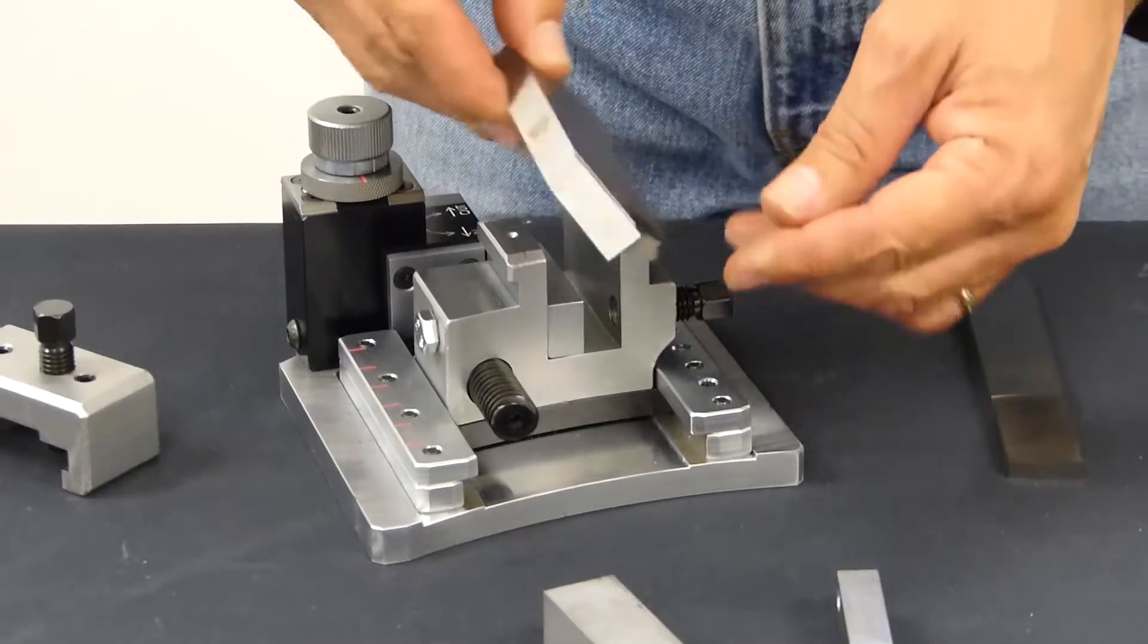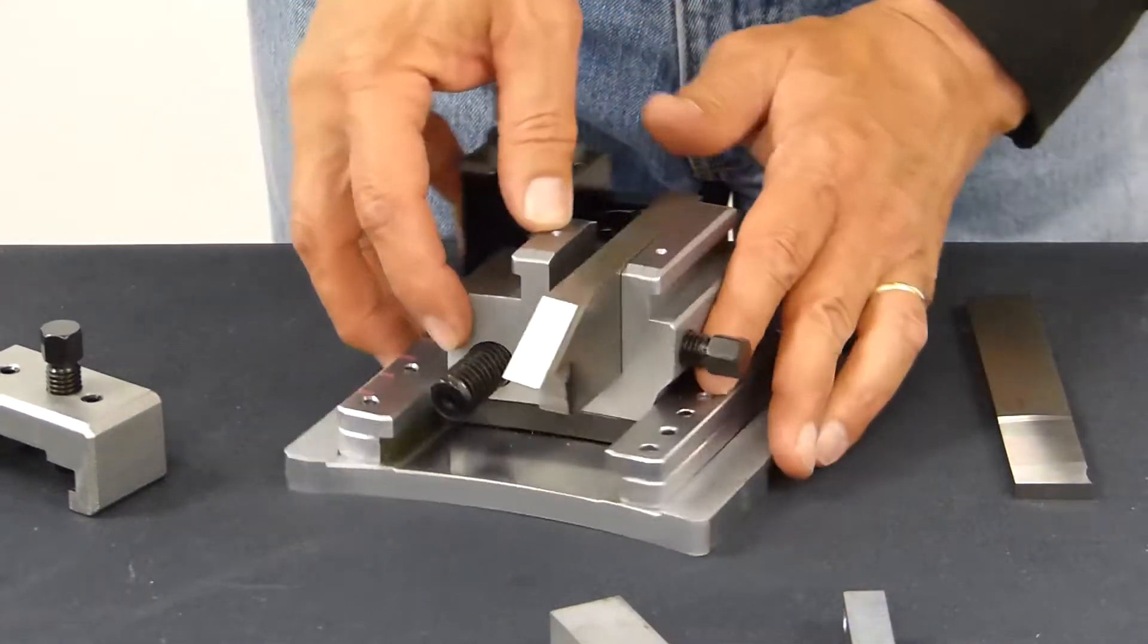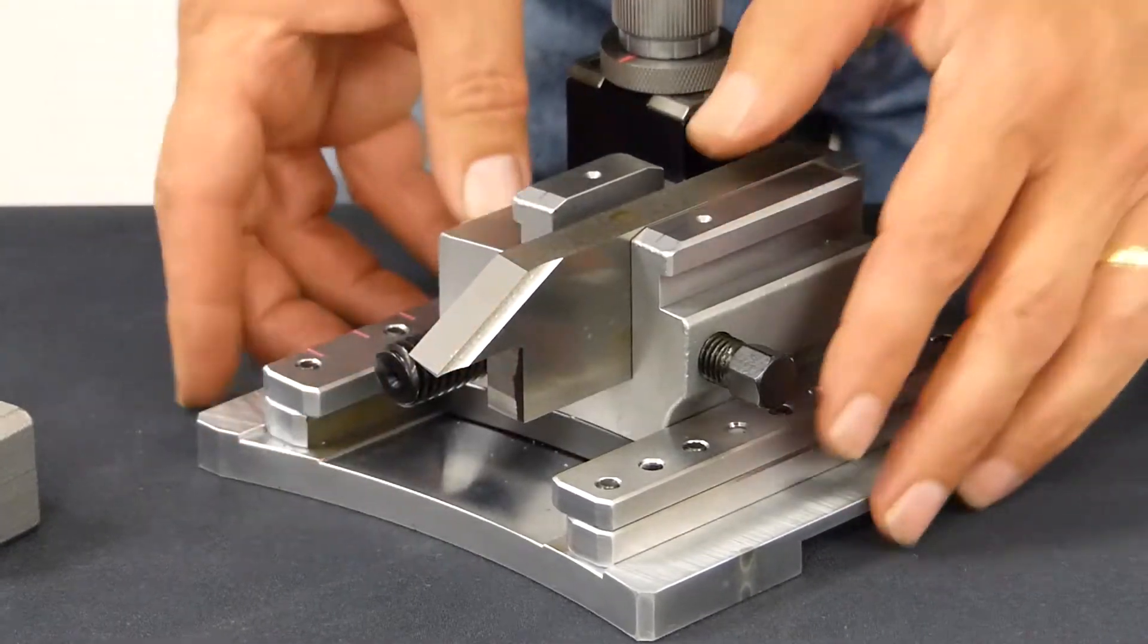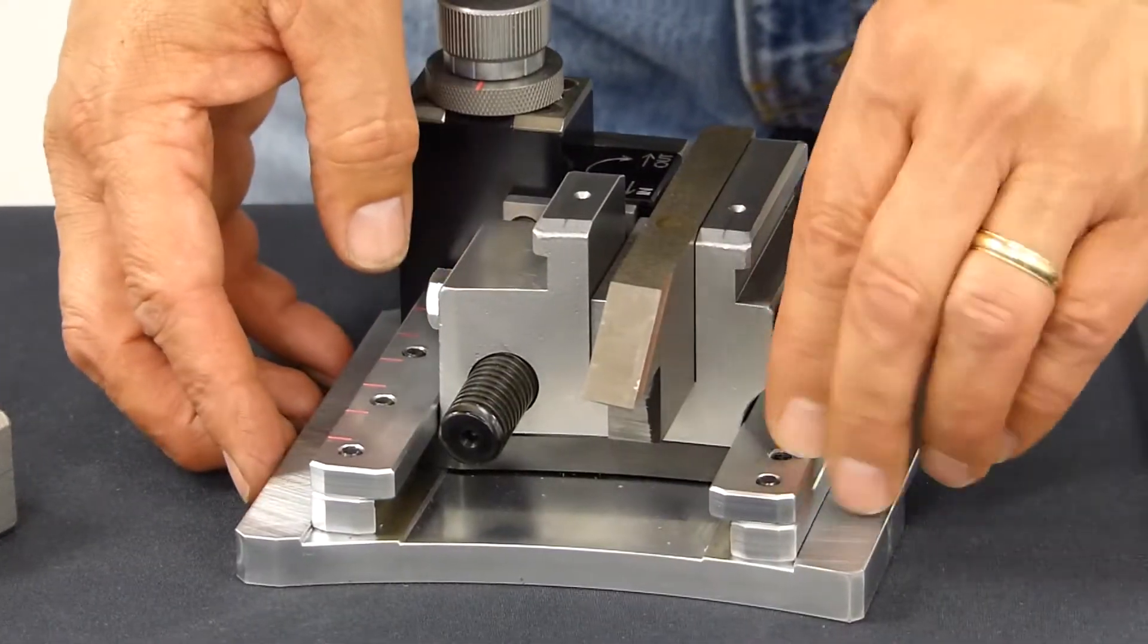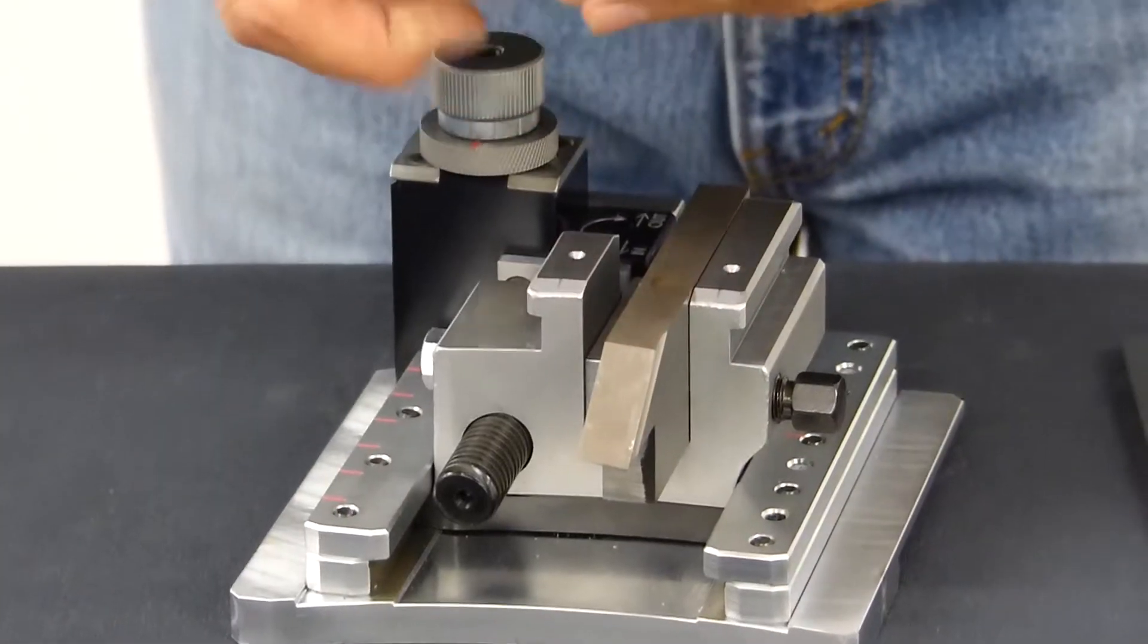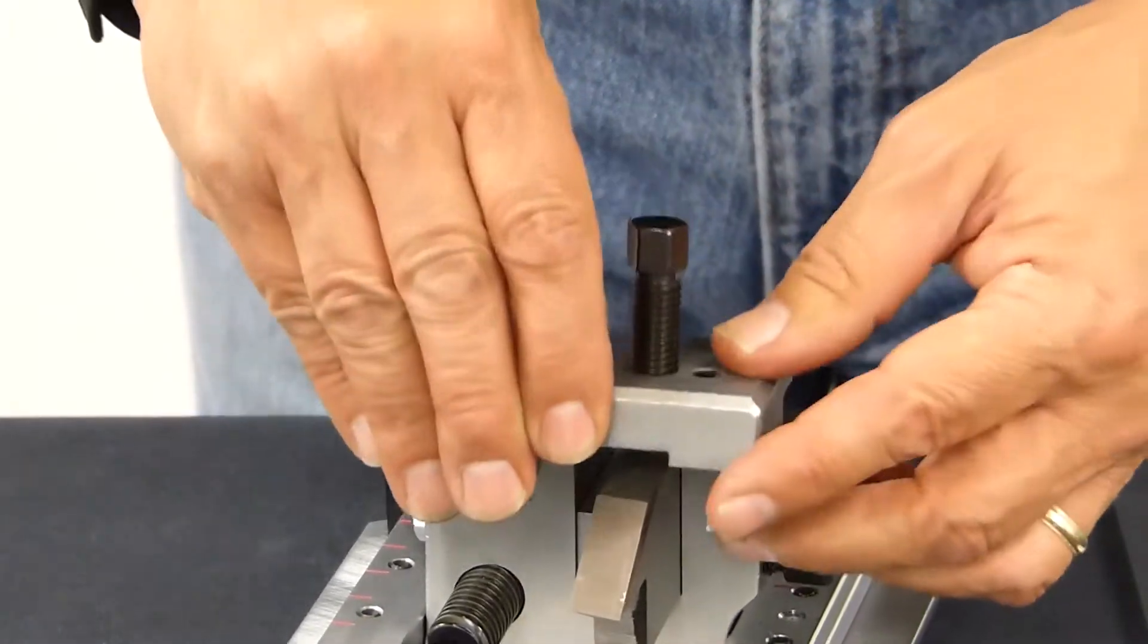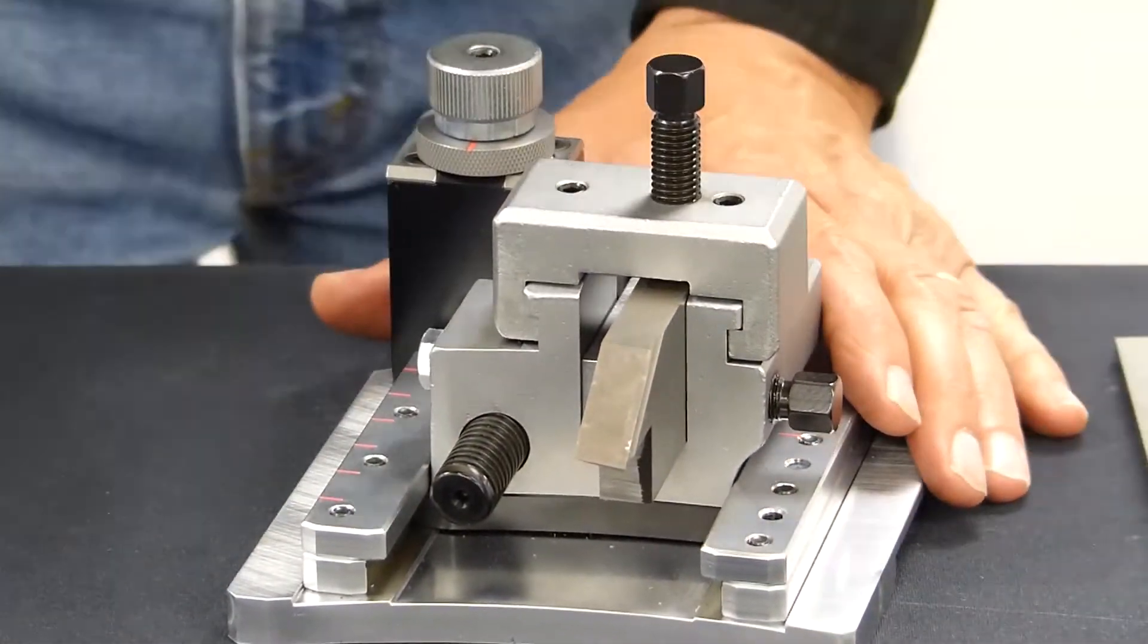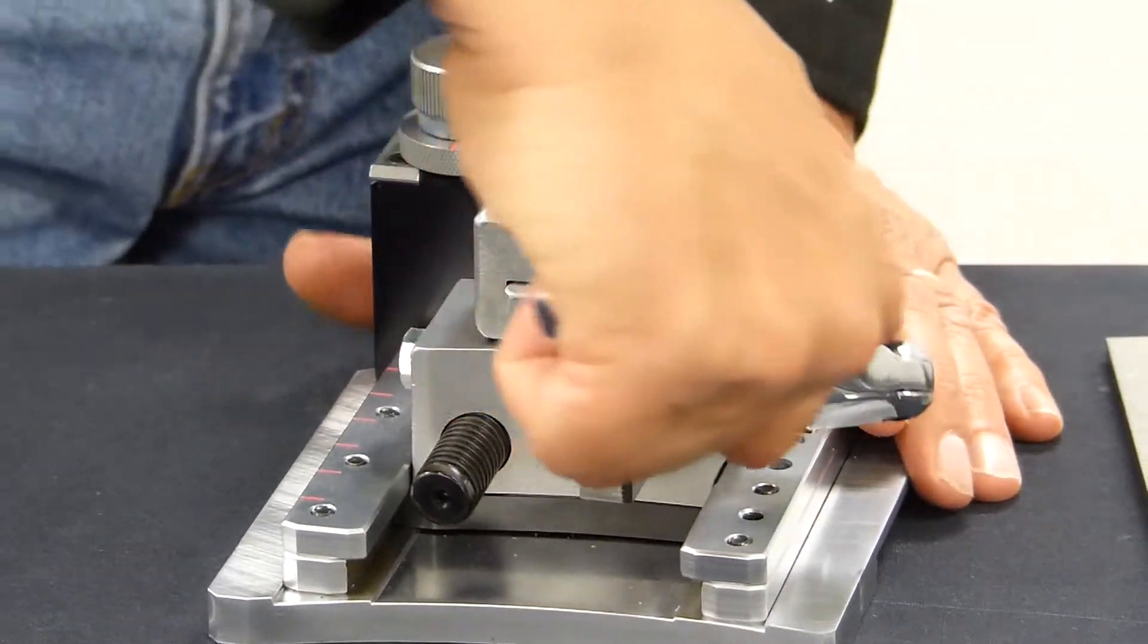Then we'll place our outside bevel tool. Set the tool to the desired position. Lock it in place.